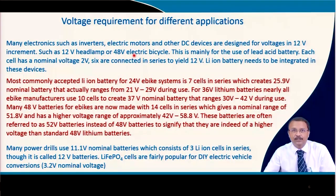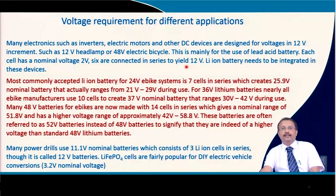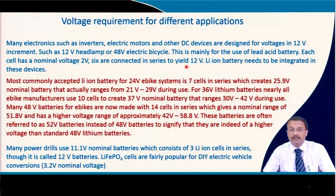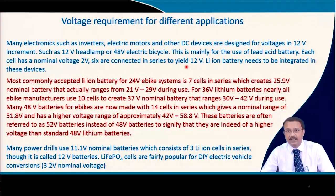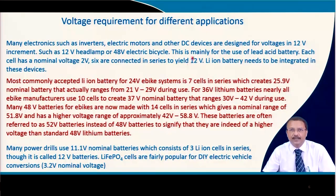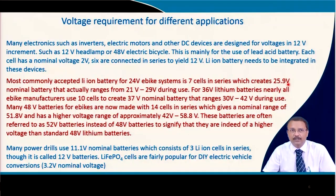12 V headlamps and 48 V electric bicycles using lead-acid batteries are very common. Each lead-acid cell has a nominal voltage of 2 V and they are connected in series to get 12 V. Now that we are trying to replace the heavier, bulkier lead-acid batteries with lighter lithium-ion batteries, lithium batteries also need to match these 12 V increments. For a commonly accepted 24 V lithium-ion battery used for electric bicycles, 7 cells in series create about 25.9 V nominal, with an actual range of 21 to 29 V.